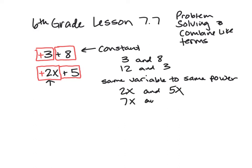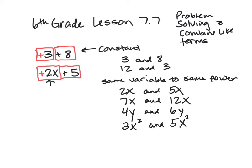Because 2 is being multiplied by x and we don't know what x is yet, we cannot put it together with the constant 12. Another set of like terms would be the same variable to the same power — like 2x and 5x, or 7x and 12x. Notice they have the same variable to the same power. 4y and 6y. 3x² and 5x² — in order to be a like term, it has to be the same variable raised to the same power.